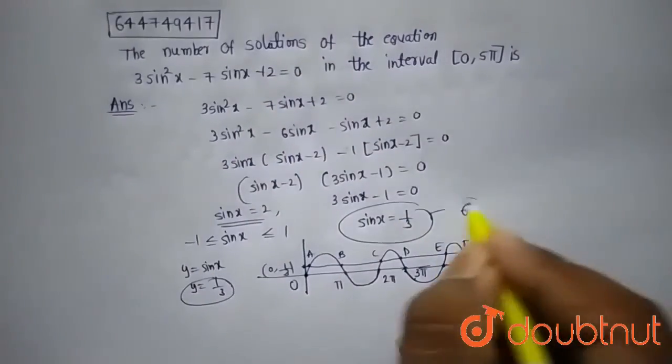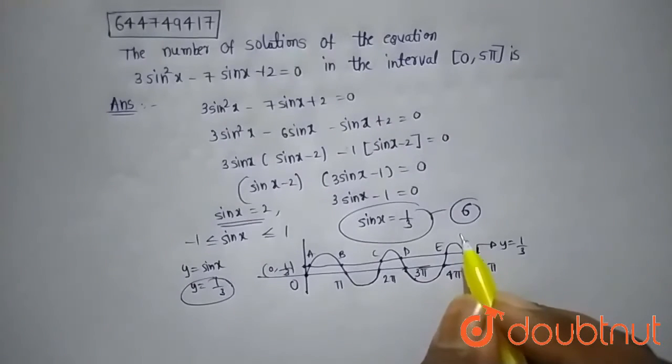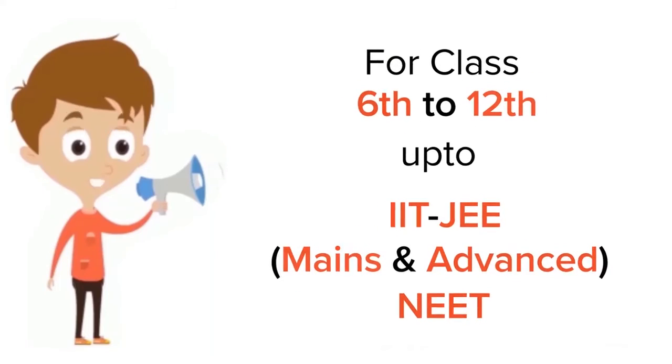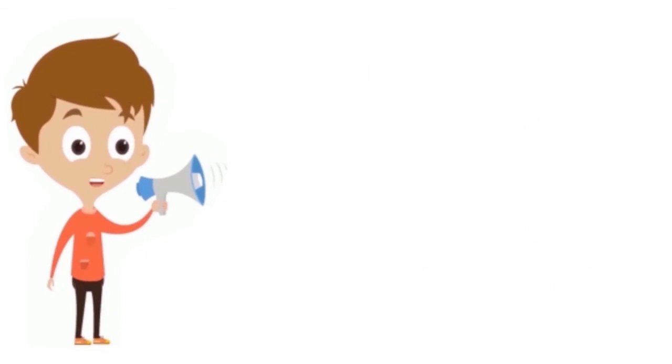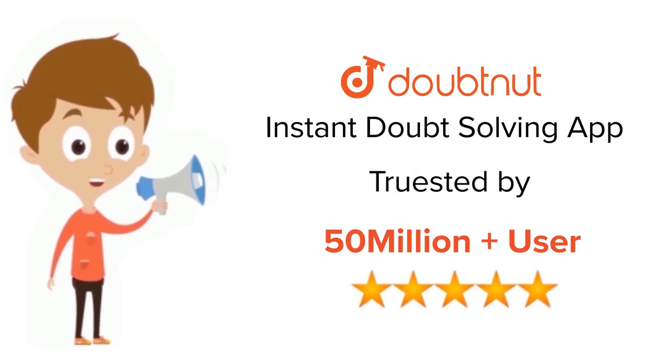solutions will be 6 in the interval [0, 5π]. So the number of solutions is 6. For class 6 to 12th, IIT-JEE and NEET level, trusted by more than 5 crore students, download Doubtnut app today.